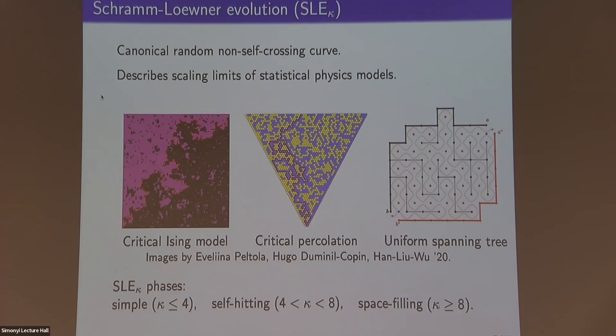Now I want to talk about Schramm-Loewner evolution, these random curves. They arise as scaling limits of statistical physics models. On the left we have the Ising model with plus boundary conditions on the left and minus on the right — the interface converges to SLE_3. In the middle, critical percolation gives an interface that converges to SLE_6. In the last case, the boundary of the uniform spanning tree converges to SLE_8.